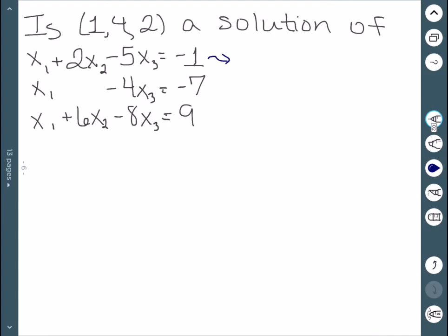So let's start with the first one. I have a 1 for x1 plus 2 times x2 would be 4 minus 5 times x3 is 2. This is 1 plus 8 minus 10 which is negative 1. So that one is valid.